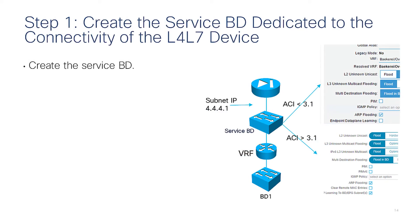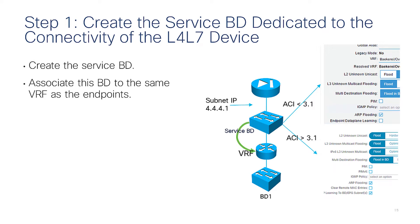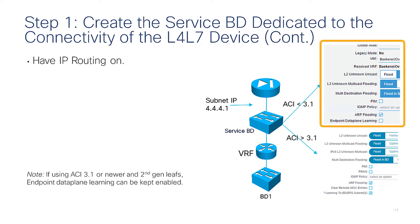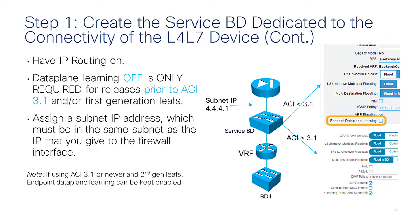Step one: creation of the service bridge domain. You create the bridge domain and associate it with the VRF — the same one used by clients and servers. You can have ARP or unknown unicast as flooding. IP routing should be on. For the data plane learning option, if you're using a version prior to 3.1 or first-generation leaves, you would have to uncheck this option. If you're using 3.1 or newer, there's no need to modify the data plane learning configuration.